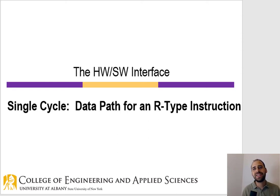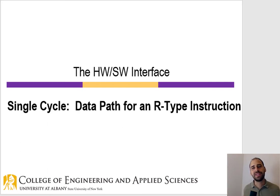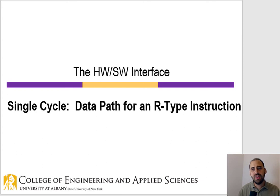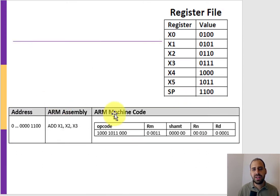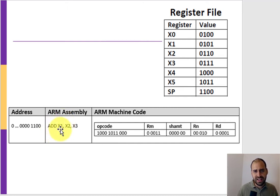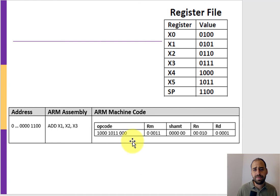Welcome back everyone. In this video we're going to look at the ARM single cycle architecture. This is a fascinating topic - looking at how a processor actually processes information. We take all the steps we've seen prior, where we learned how an ARM instruction gets converted to machine code. Let's take an R-type instruction such as ADD: register 2 plus register 3, storing the result in register 1. I've already converted it into machine code to save some time, and we're going to learn how to trace this in the ARM single cycle.